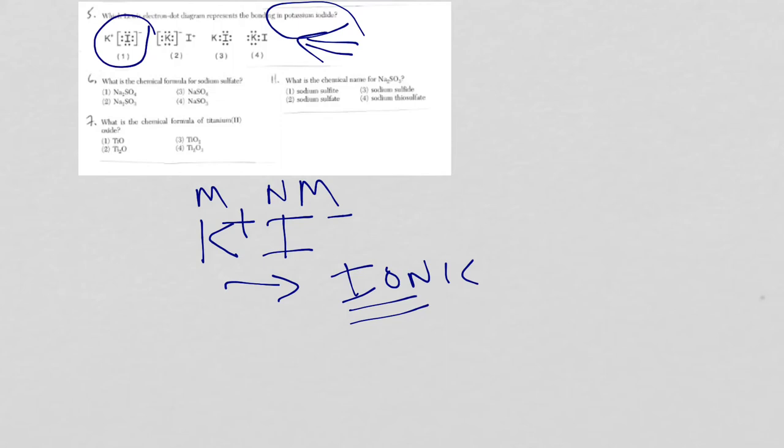Alright, let's move on. Questions six, seven, and number eleven are all for writing out a formula from a name. So first, let me go ahead and erase everything and take a look.